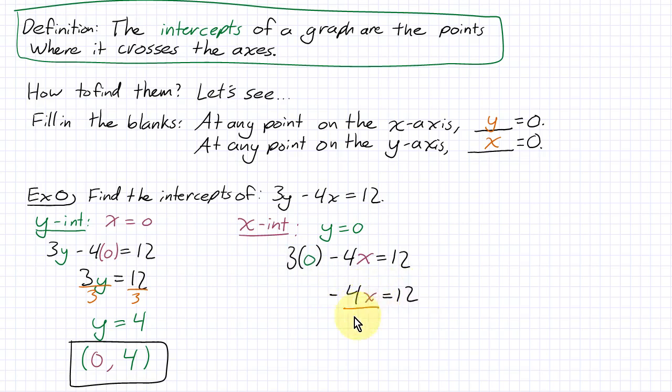We can divide both sides by negative 4, which gives you x equals negative 3. That's not the actual x-intercept by itself. I want to write it as a point because it is the actual point where x is negative 3 and y is 0, so (-3, 0).